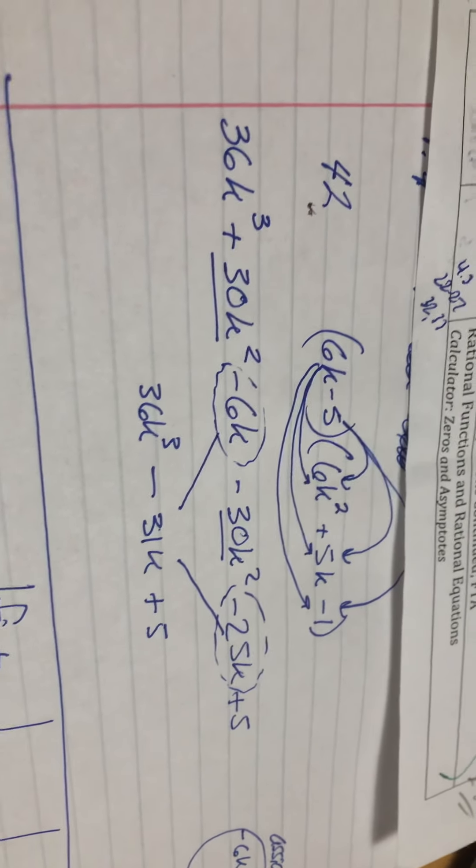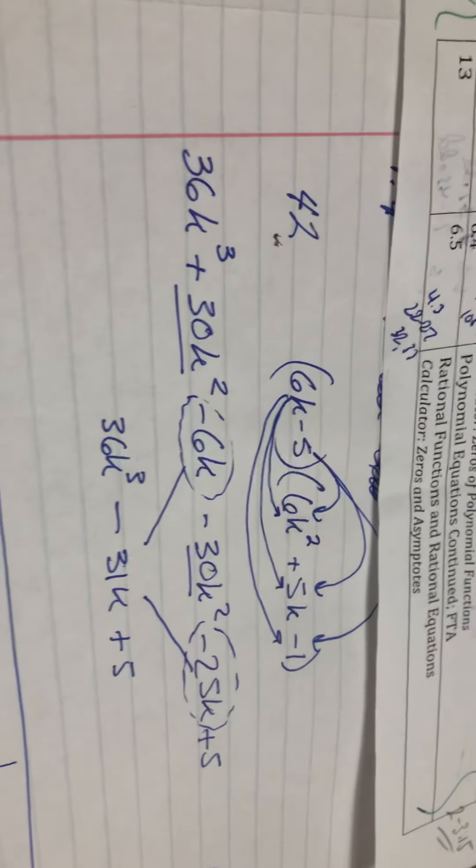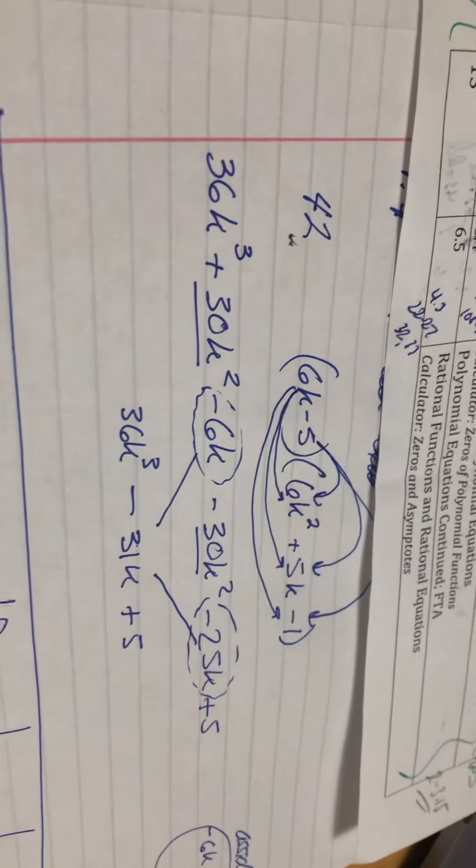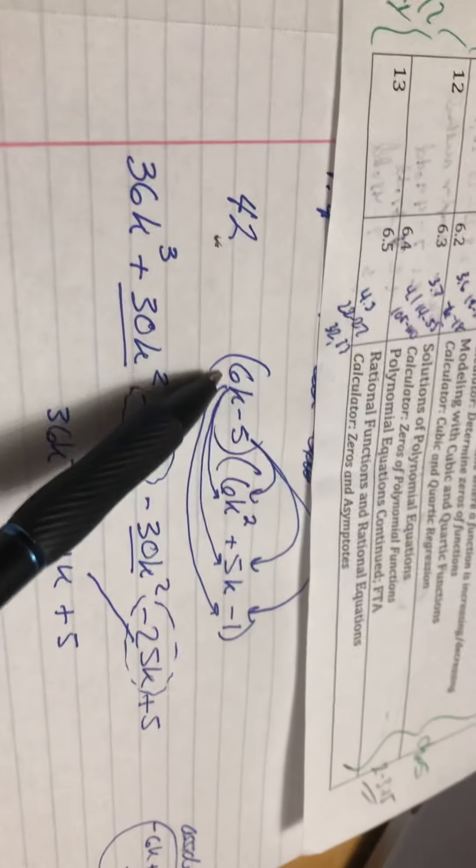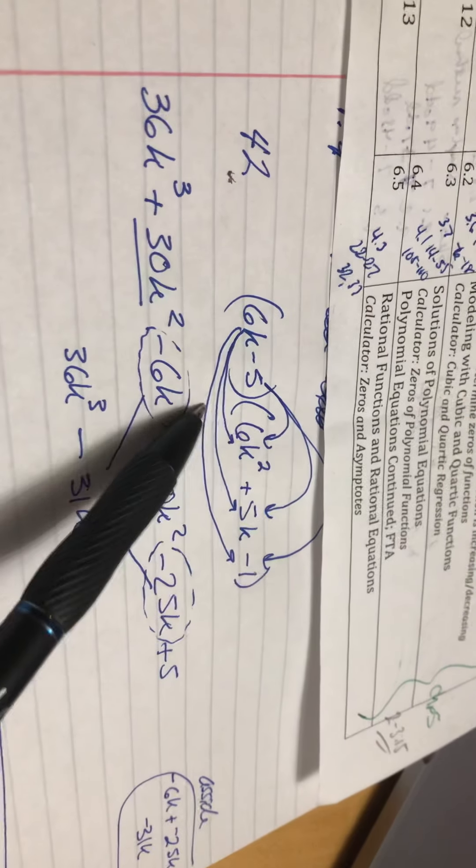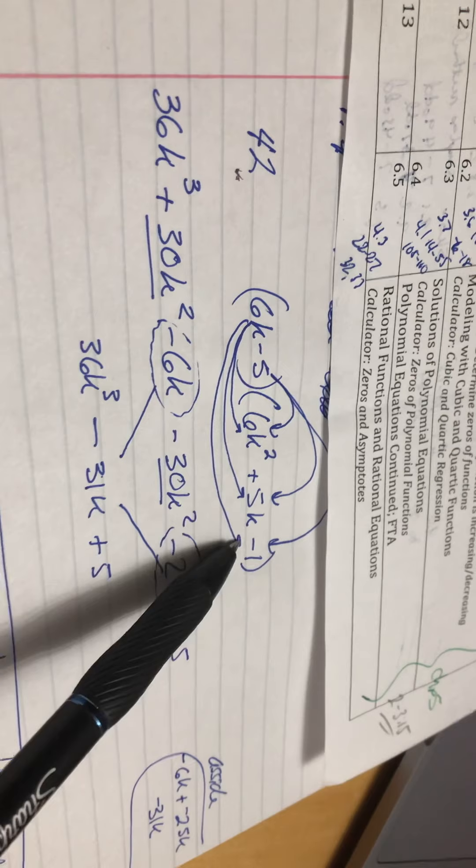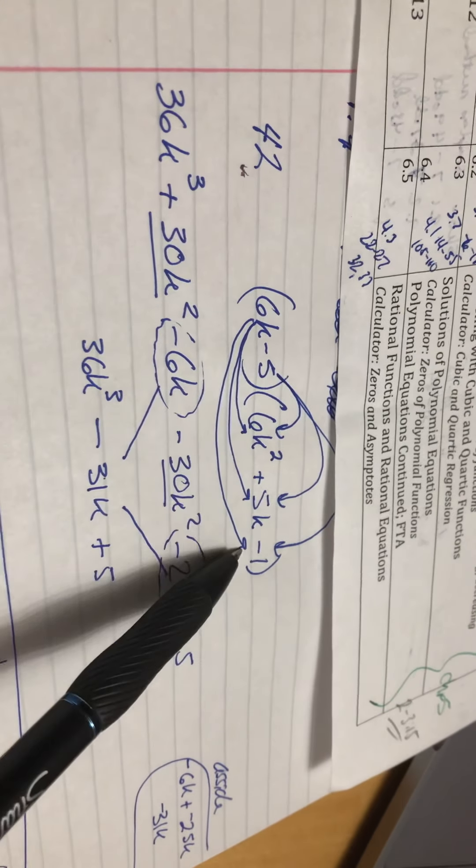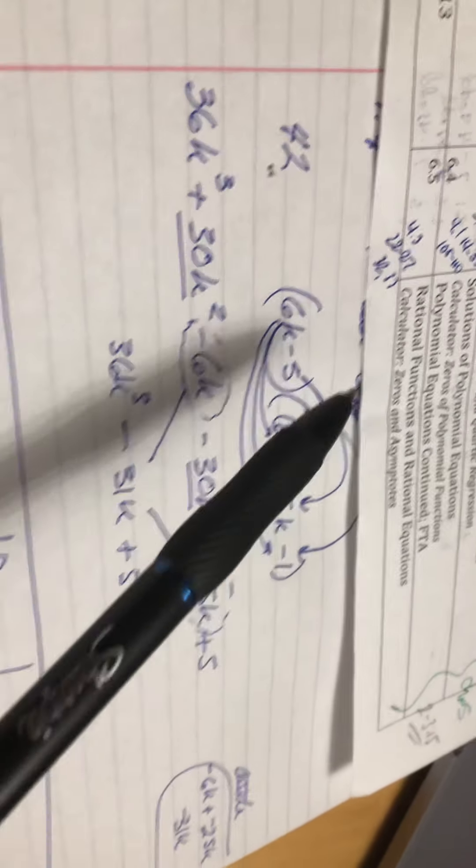Hey everybody, so I'm going to do problem 42 from section 1.4 and the problem is to multiply 6k minus 5 times 6k squared plus 5k minus 1 and I've drawn these arrows out to kind of indicate what you're supposed to do.